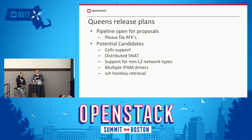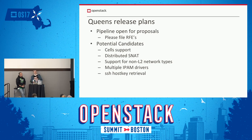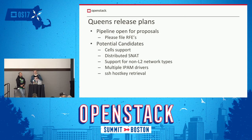Some things that have come up in recent meetings: cell support, a similar scaling solution to what Nova has; distributed SNAT; support for more network types; multiple IPAM drivers loaded at the same time, similar to the ML2 concept where different networks can get IP addresses from different systems. Another recent proposal is SSH host key retrieval, where Neutron can ask an instance over a trusted network path for its SSH host key, retrievable via an API so users have a secure path to get the host key when initially connecting.